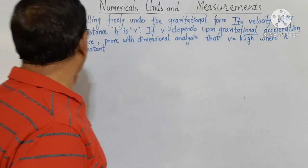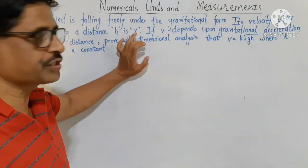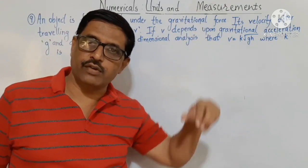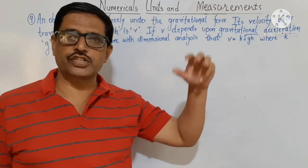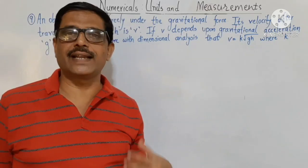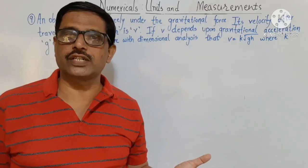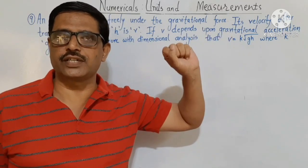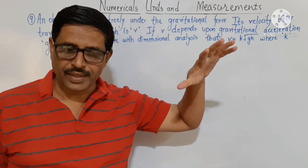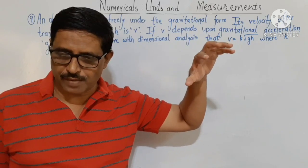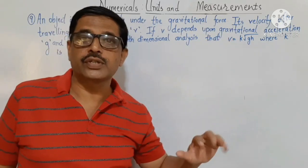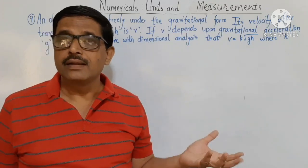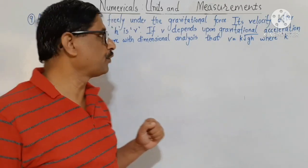After covering a distance h, the body attains a velocity v. At the start when it is released, the velocity is zero, and as it falls the velocity increases because of the gravitational acceleration.